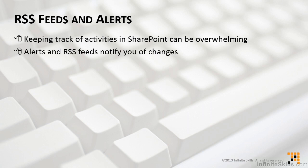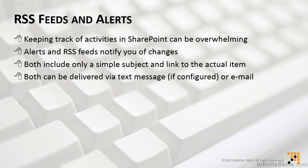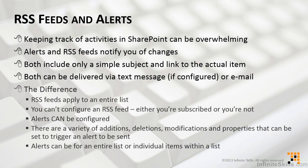These all notify us of changes. Both RSS feeds and alerts include only a simple subject and link to the actual item — they don't give us the entire detail when they notify us. Both can be delivered via text messaging, if configured for your version of SharePoint, or via email. The differences are that RSS feeds apply to an entire list and can't be configured — it's either subscribed or not, basically on or off. Alerts, on the other hand, can be configured. There are a variety of additions, deletions, modifications, and properties that can be set to trigger an alert. With an RSS feed, it's just a change that triggers it in general.